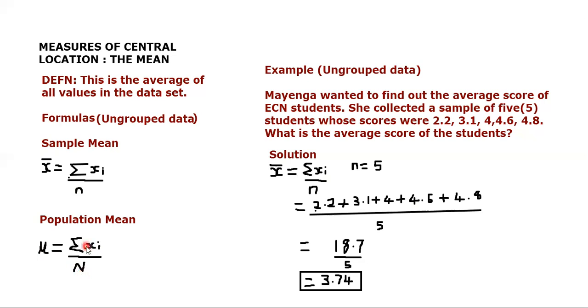When you talk about Xi, Xi simply means a particular single observation in the data set that you've been given. When you add all those separate observations given in that data set, you get the summation of Xi of those single observations.